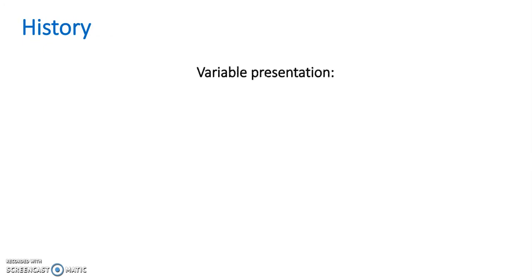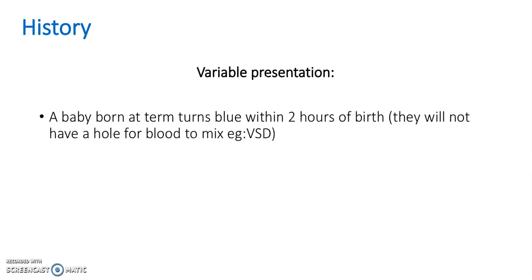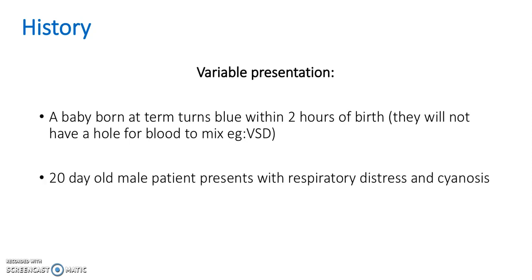Let's take a look at a history and see whether you can pick out the key points. A baby born at term turns blue within two hours of birth — they will not have a hole for blood to mix like a VSD, and so they will cyanose. Or a 20-day-old male patient presents with respiratory distress and cyanosis.